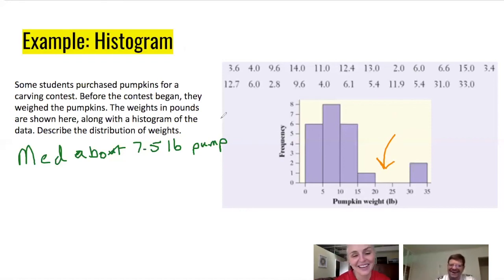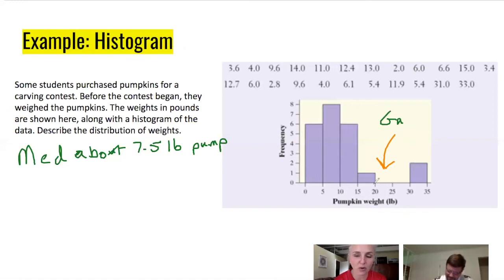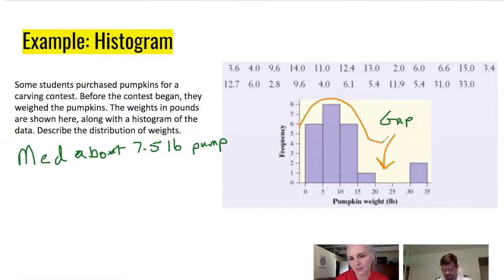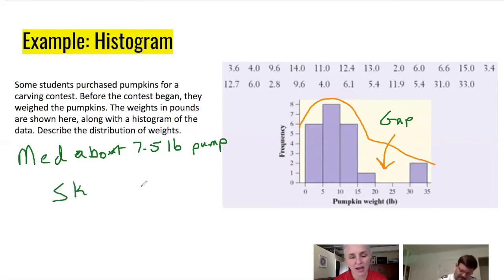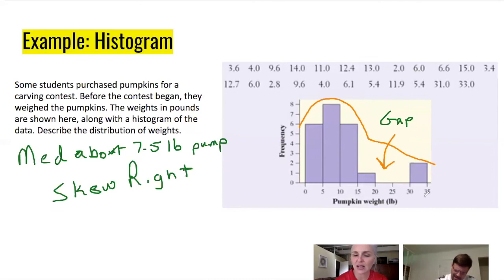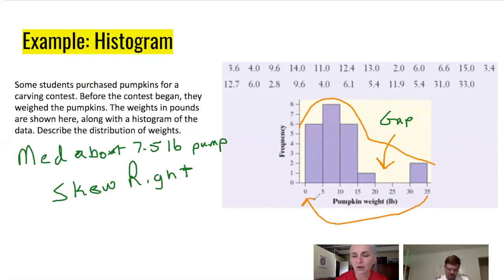For anything unusual, we've got a gap in the graph — we want to note that. Then for shape, this distribution appears to be skewed right. For spread, using the graph, 35 minus 0 gives a spread of approximately 35 pounds. Use a wishy-washy word like 'about' or 'approximately' since you're reading from the graph intervals.